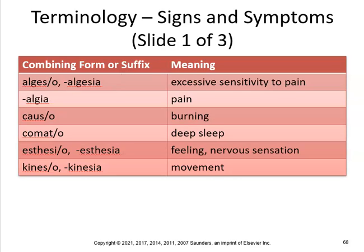Here are some signs and symptoms you might see. Algesia is excessive sensitivity to pain; analgesia is a condition of no sensation of pain, usually accompanied by sedation without loss of consciousness. Algea means pain — neuralgia is nerve pain, causalgia is a burning sensation of pain. Cephalalgia is a headache — next time you have a headache you can say you're experiencing cephalalgia.